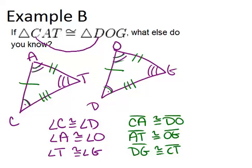So anytime you know two triangles are congruent and you have a congruent statement, you will always know six pieces of information, three about angles, and three about sides.